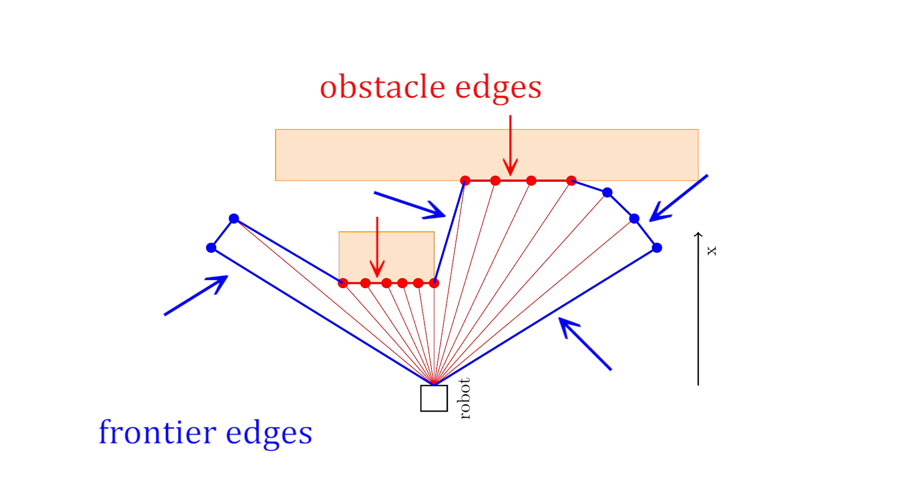So, to use our representation for exploration, we need to meaningfully remove frontier edges as new measurements come in. We call this process frontier consolidation between neighboring local volumes.